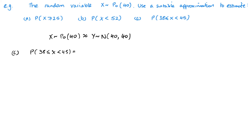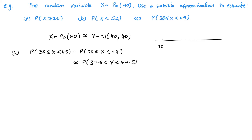For the final part, we have a probability between two values. The first step is to make both inequalities include an equals sign. X less than 45 becomes X less than or equal to 44. Once that's done, I apply continuity correction: we're looking between 38 and 44, so in terms of the normal distribution we take everything that rounds up to 38 and everything that rounds down to 44, giving us 37.5 and 44.5.